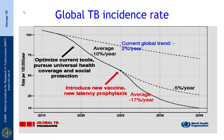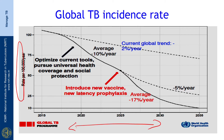This slide shows the global TB incidence rates. The x-axis shows the rate of TB per 100,000 population per year, and the y-axis is the time from 2015 to 2035. The current rate of decline of TB incidence is about 2 percent per year. This rate of decline is not enough to achieve a 90 percent reduction in TB incidence rates; at the most we will achieve about 25 percent reduction by the year 2035.